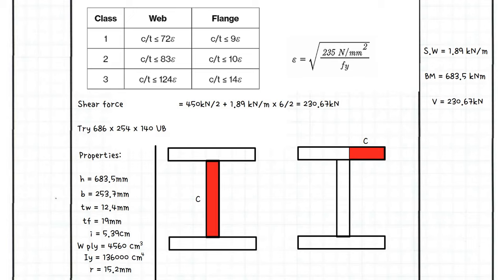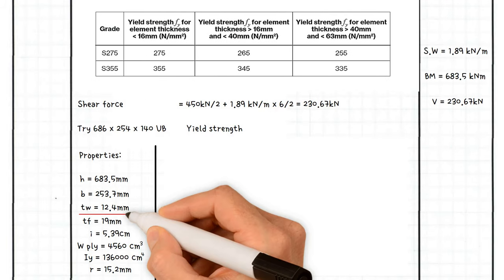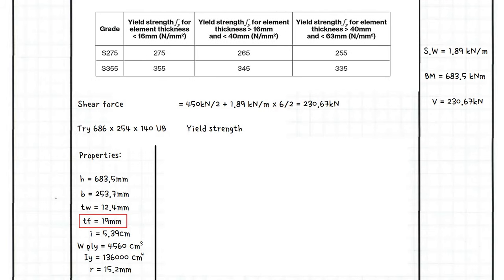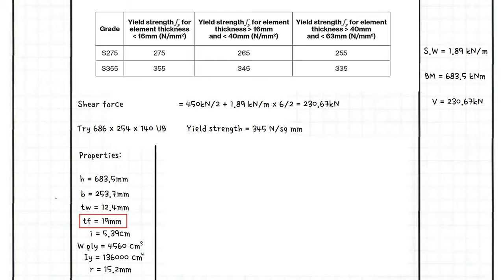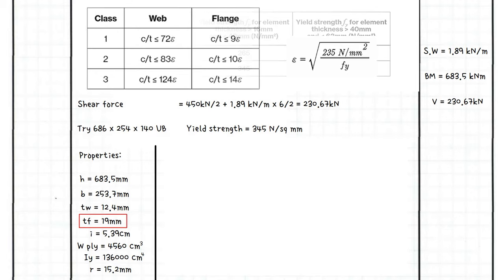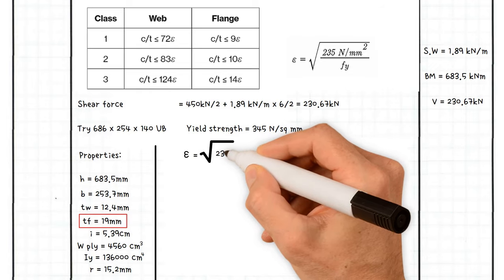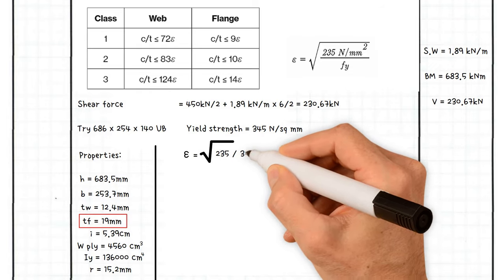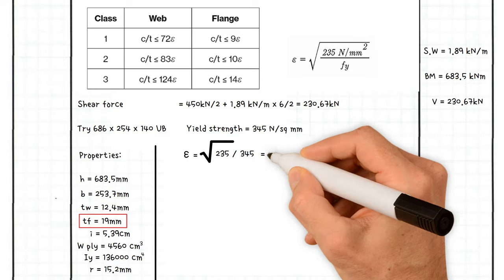So now back to our worked example. The yield strength for elements greater than 16 millimeters and less than 40 millimeters is 345 N per square millimeter for steel grade of S355. Therefore, coefficient epsilon equals the square root of 235 divided by 345. This gives us a value of 0.83.